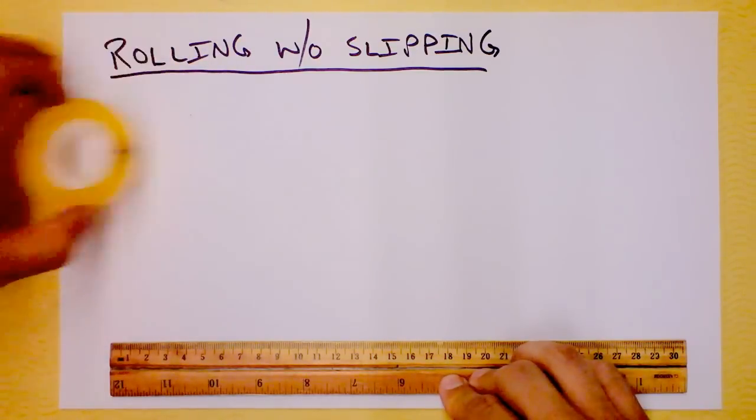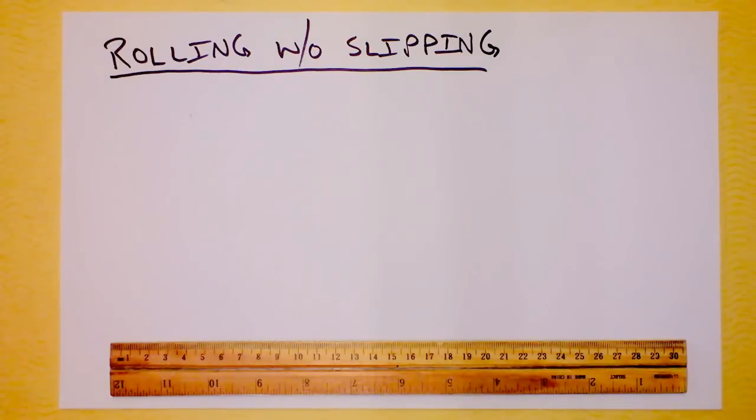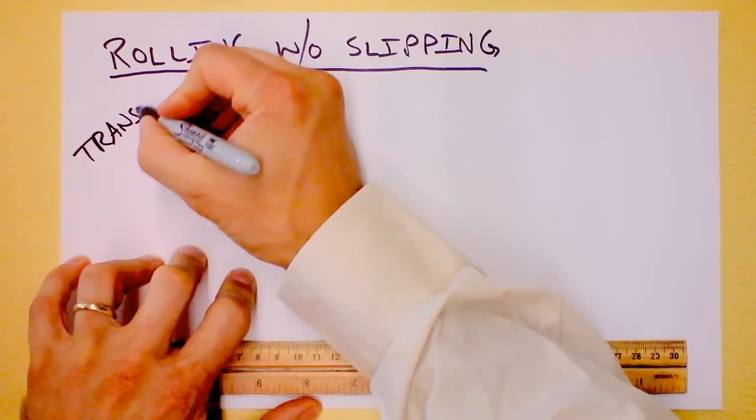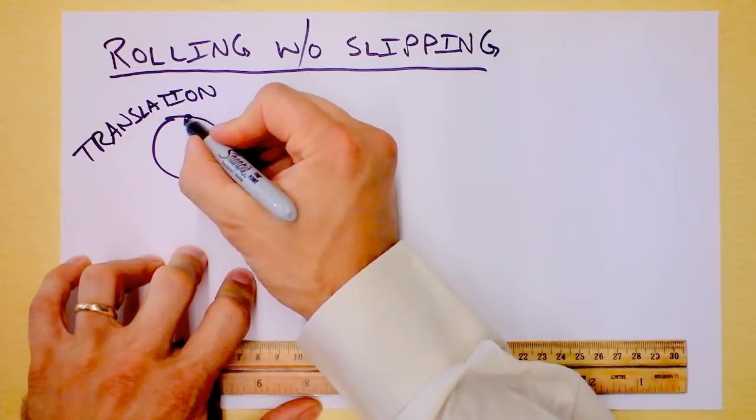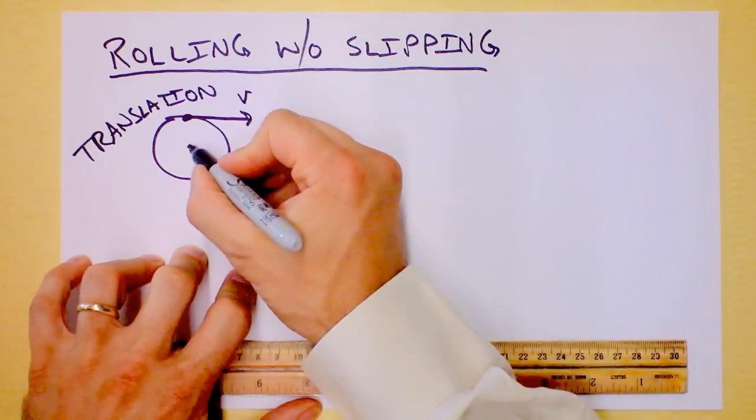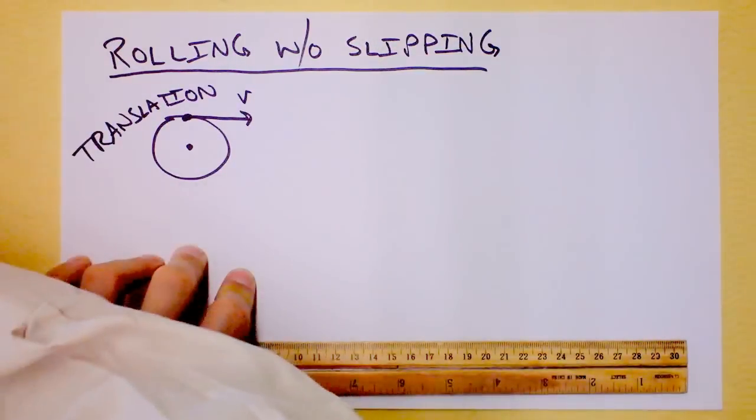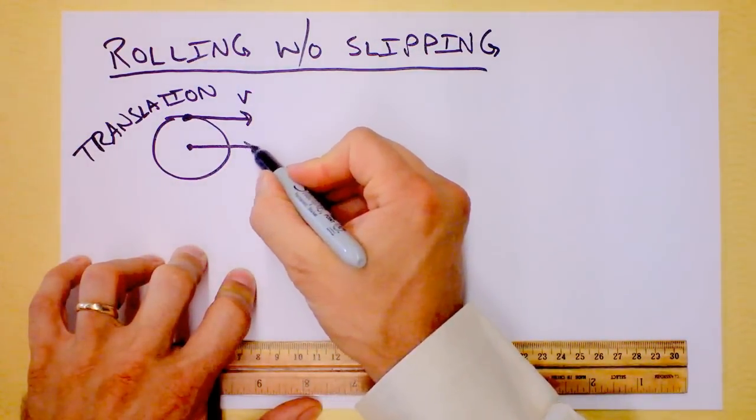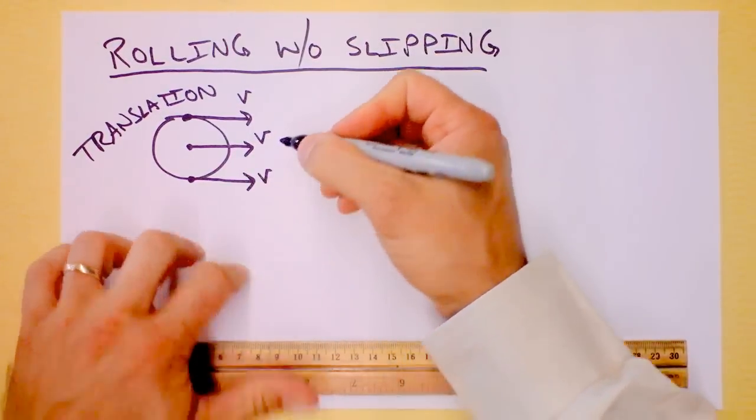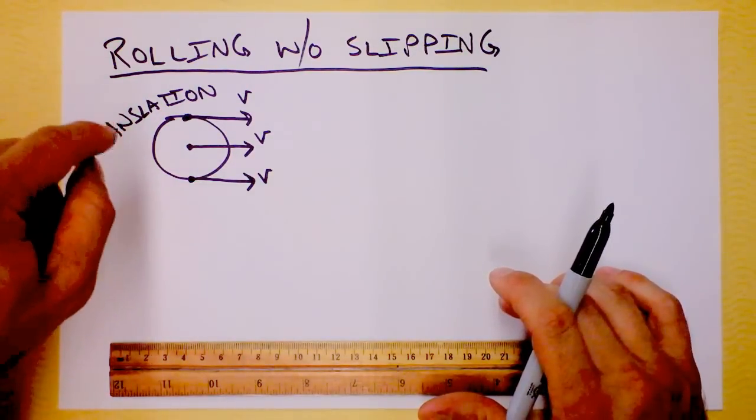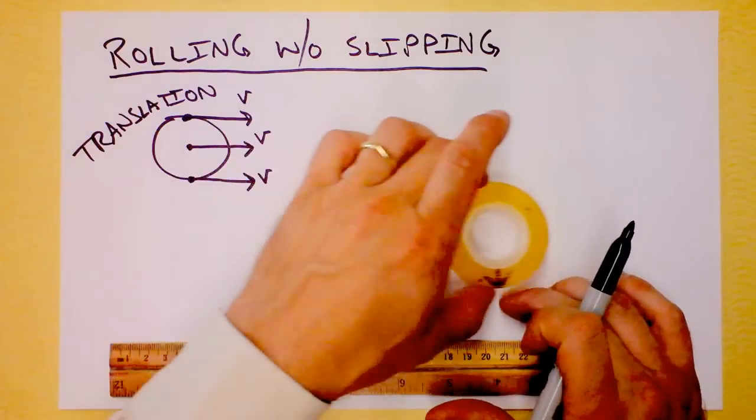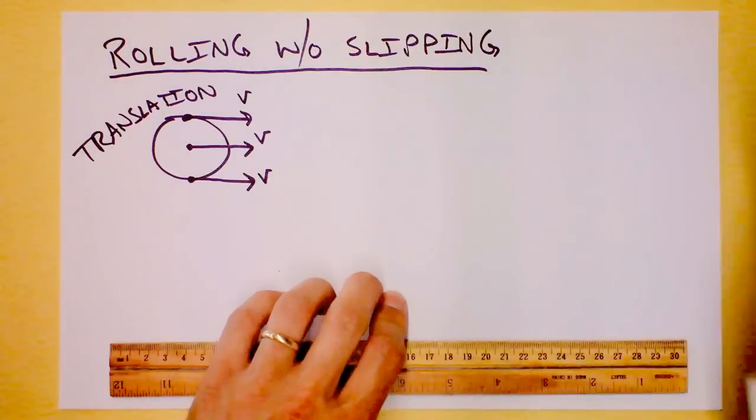I could draw both of those and draw you some velocity vectors. So there's translation. Translation looks like this: the top of the wheel or tape is moving at some velocity, the center or the axle is moving at the same velocity, and the bottom is also moving at the same velocity. Translation is rolling with slipping, or maybe it's not even rolling. It's you slam on the brakes and the car skids as you continue to translate the car.